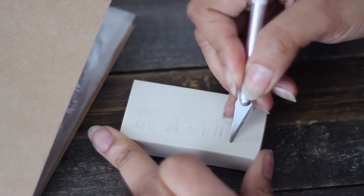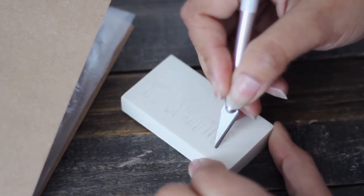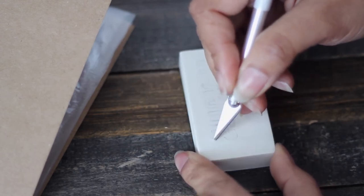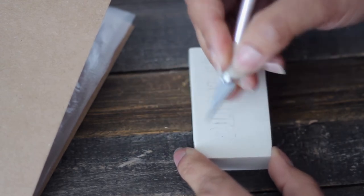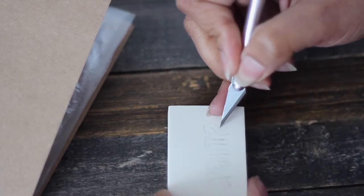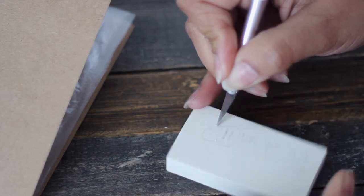Now making sure that you keep your blade in this position, you're going to start to trace around your letters or shapes. And the easiest way to do that is to move the design by hand instead of moving your blade. Just keep it inserted into the eraser and start to swivel the block around as you move.